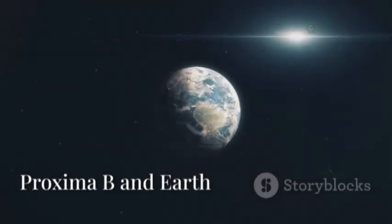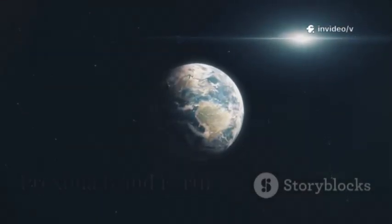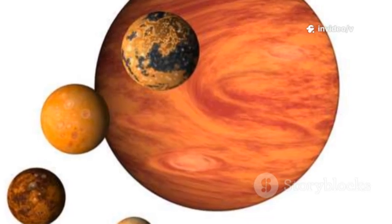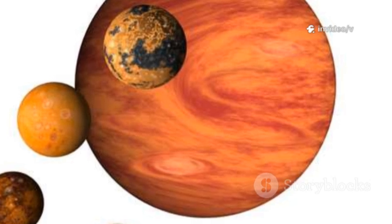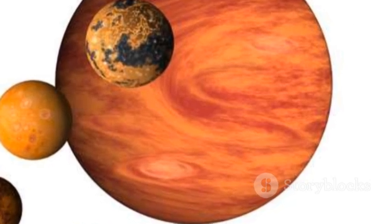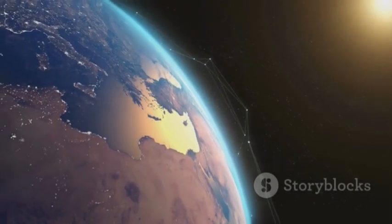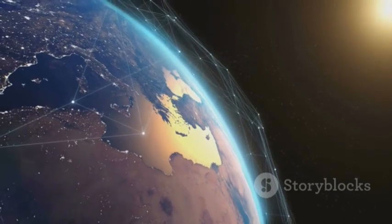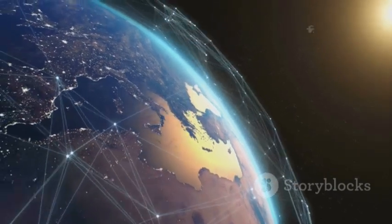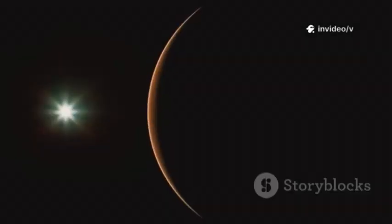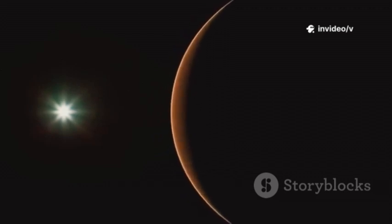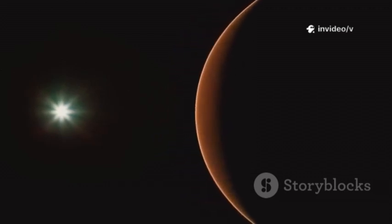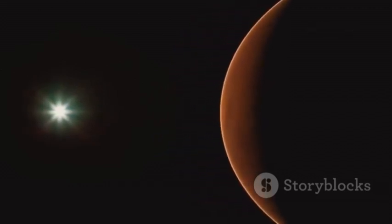Comparing Proxima b and Earth reveals just how rare our planet is. Both are rocky and in the habitable zone, but Earth orbits a stable, middle-aged star. Our sun's steady energy, combined with Earth's thick atmosphere and strong magnetic field, has allowed life to flourish. Earth's magnetic shield protects our atmosphere from being stripped away, a fate that befell Mars and, now we know, Proxima b.